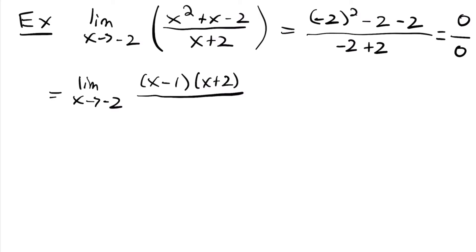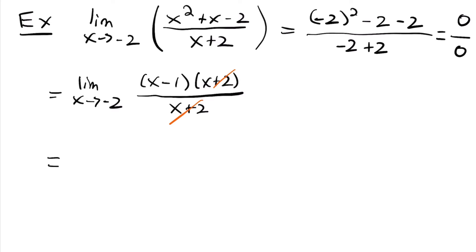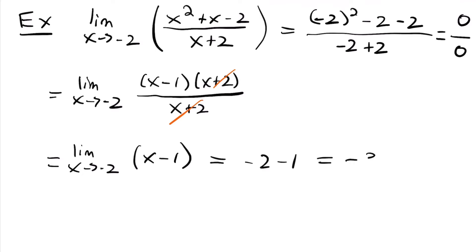Just like that, the denominator term x plus 2 is one of our factors on the top. Now that we've factored, we can cancel those x plus 2 terms out, and we're left with the limit as x approaches negative 2 of x minus 1. Plugging in negative 2 gives us negative 2 minus 1, which equals negative 3.